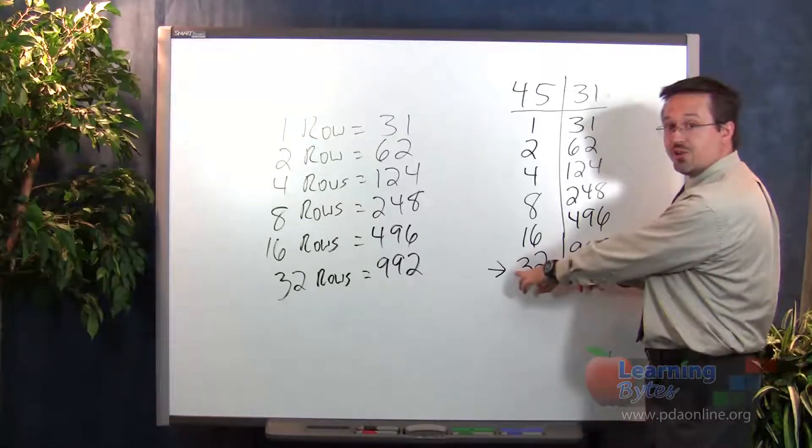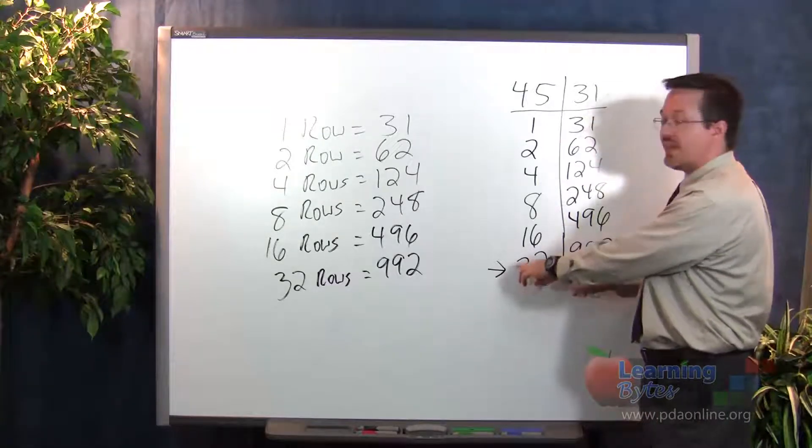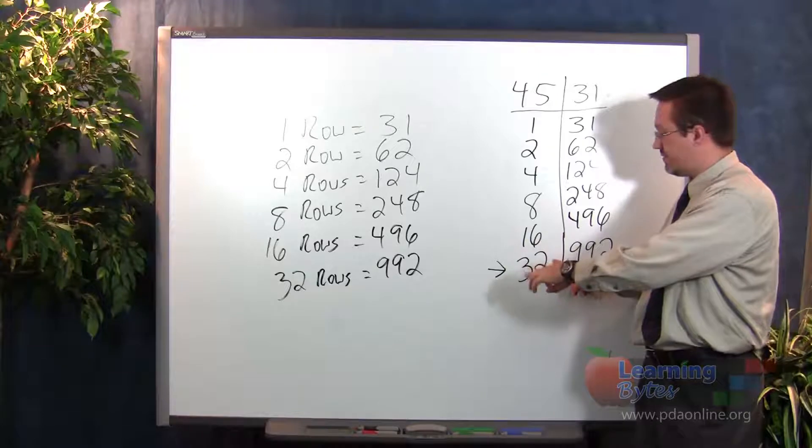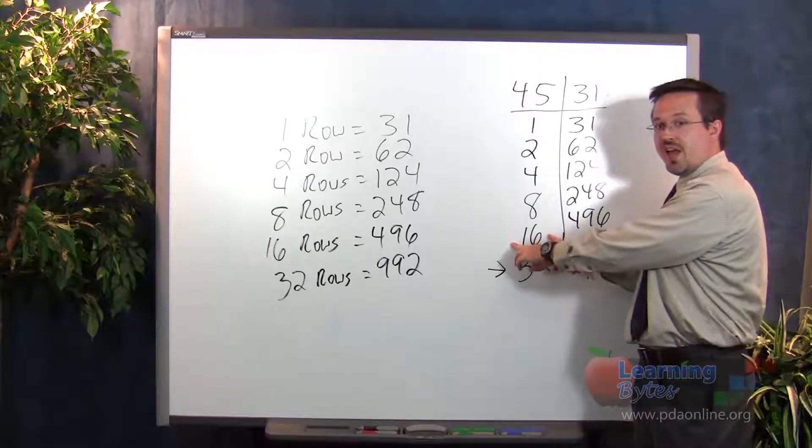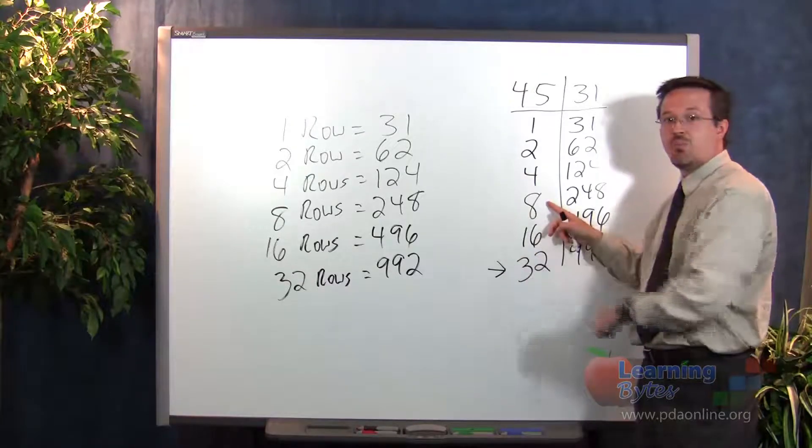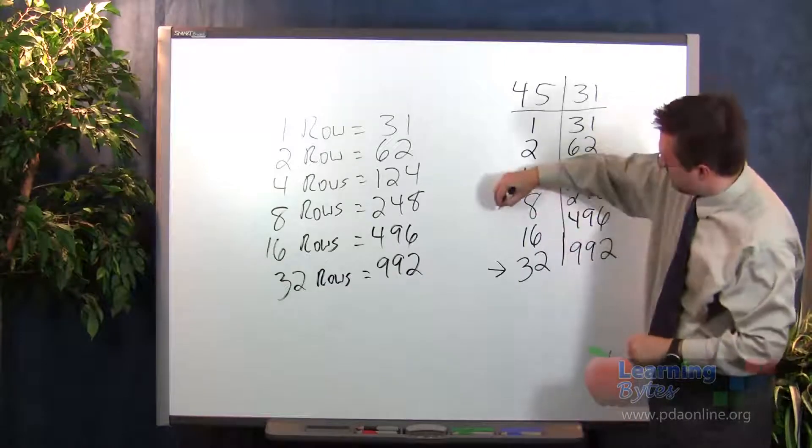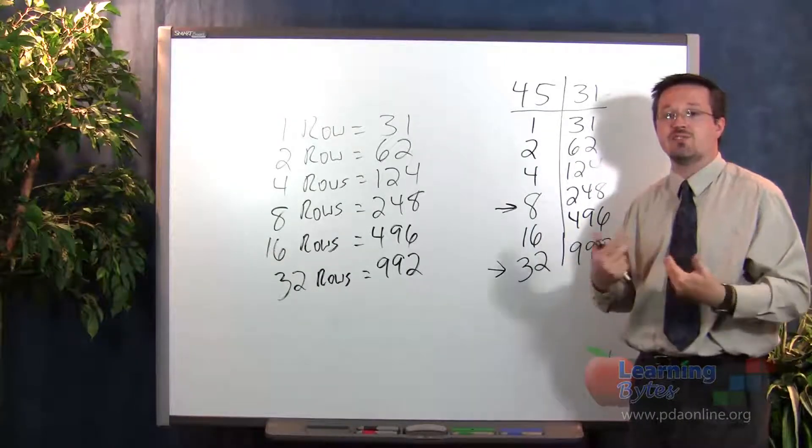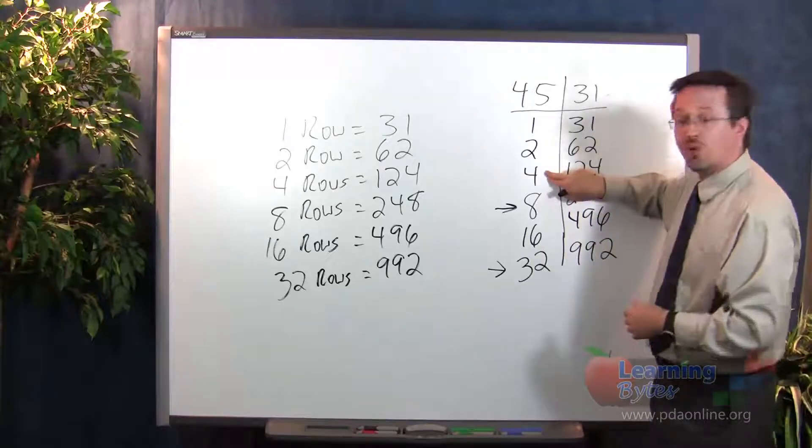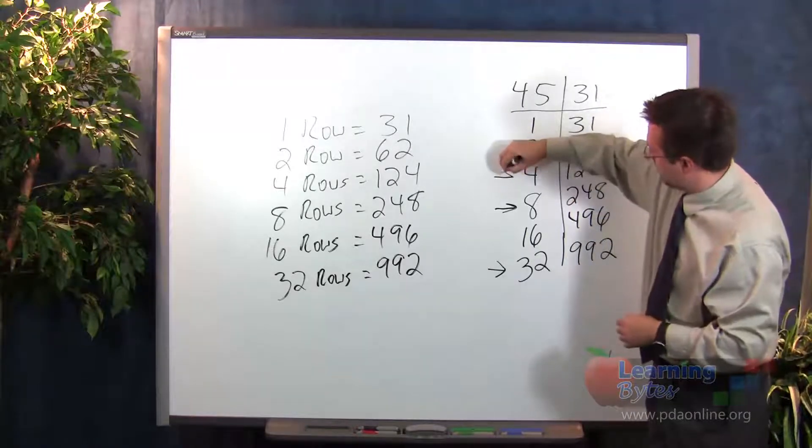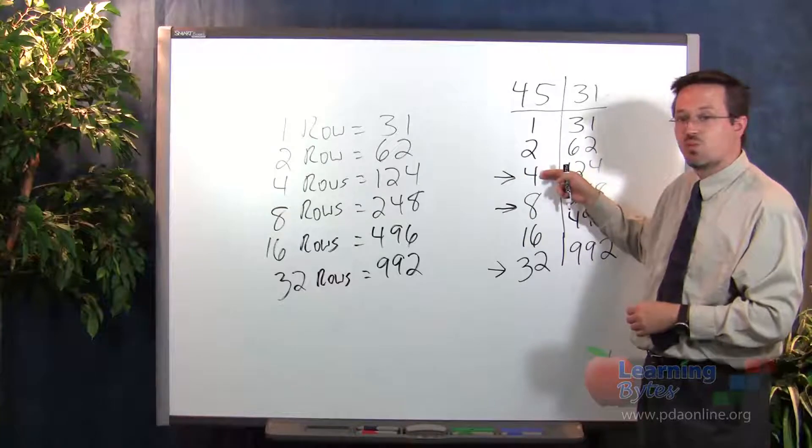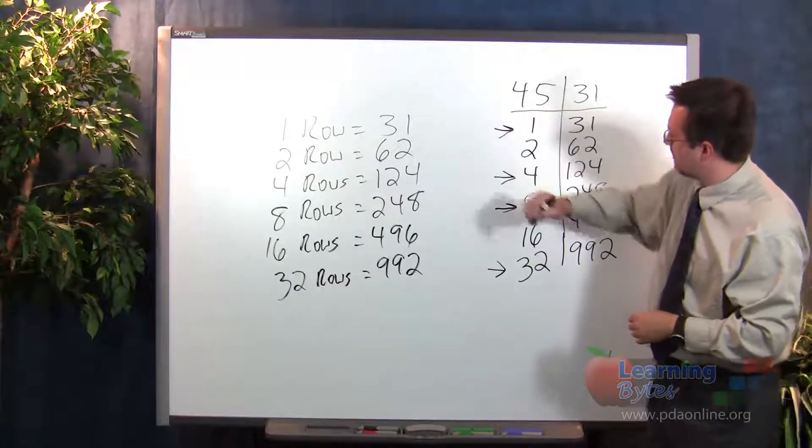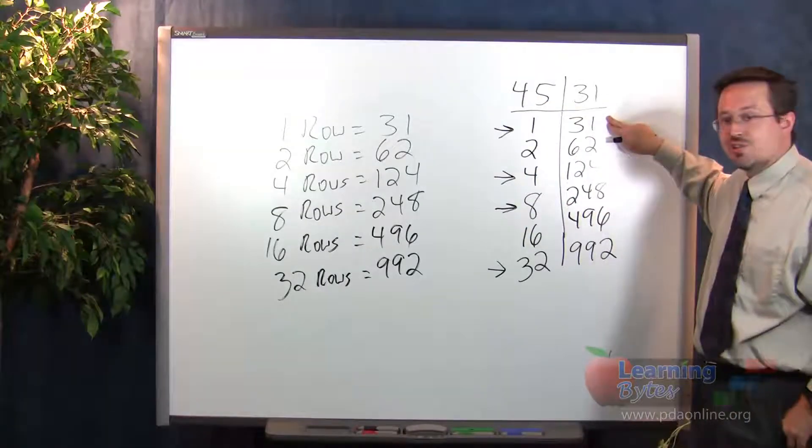Okay, if we take out 32 rows from 45, that leaves us with 13 rows left. We can't pull a 16 out of 13, but we can pull an 8 out of 13. So we're going to mark that. We'll pull 8 out of the 13, that leaves us with 5. We can pull a 4 out of a 5, and that leaves us with 1. So we'll take the 1. That indicates the numbers that you'll want to add.